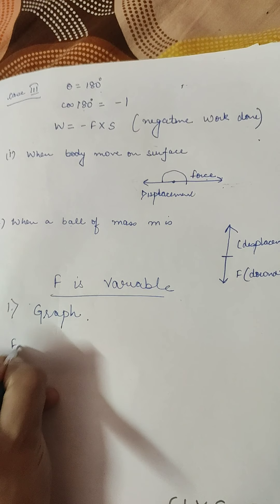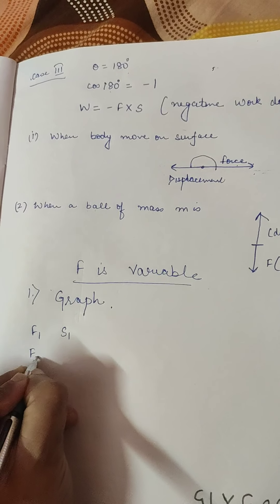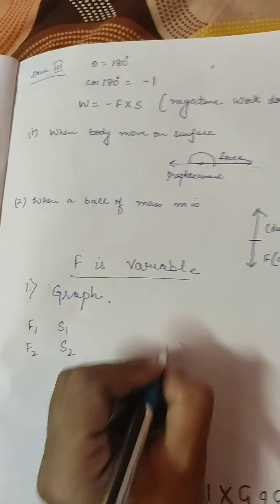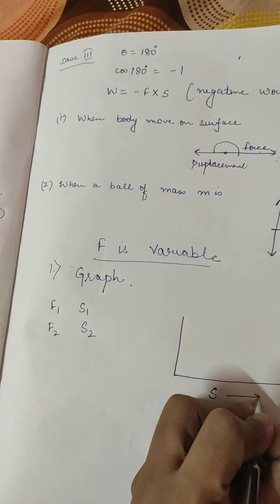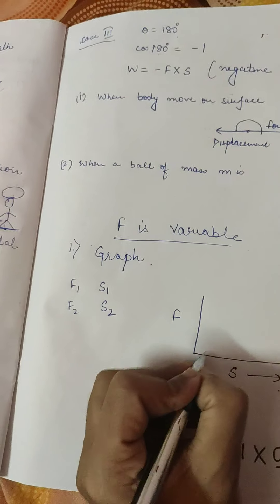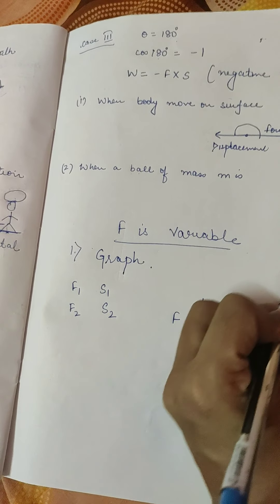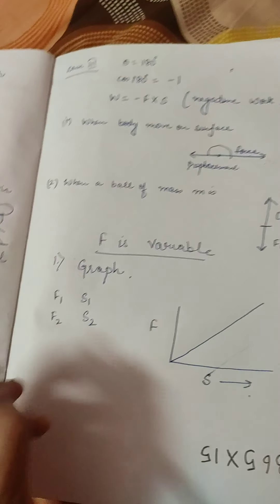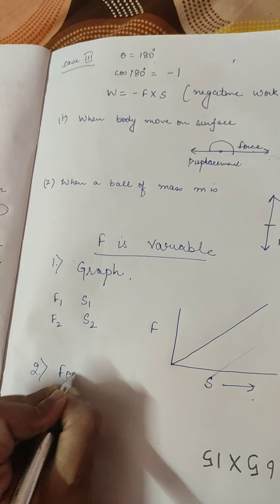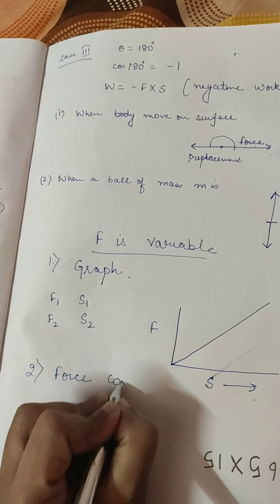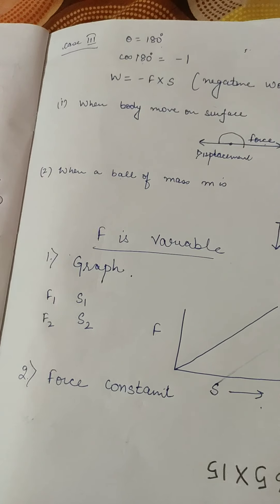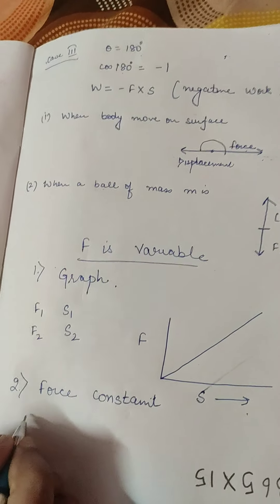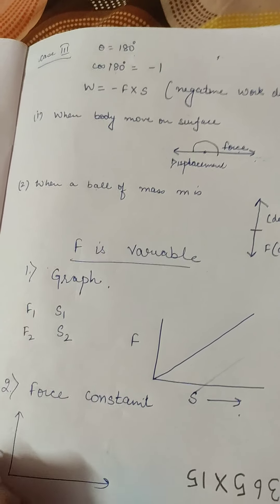We will plot a graph by considering: for F1 we are covering distance S1, for F2 we are covering distance S2. We take displacement on the X axis and force on the Y axis, then draw a graph. This graph is also helpful when your force is constant, as you have done in 9th standard when studying motion in one dimension.